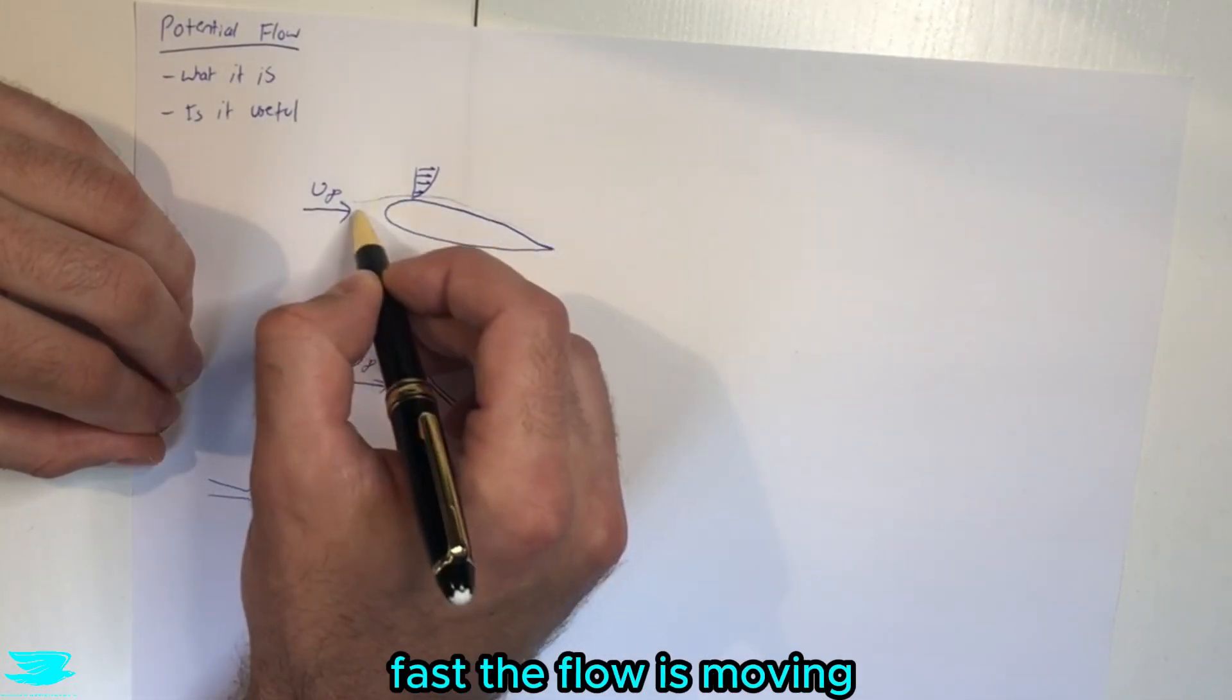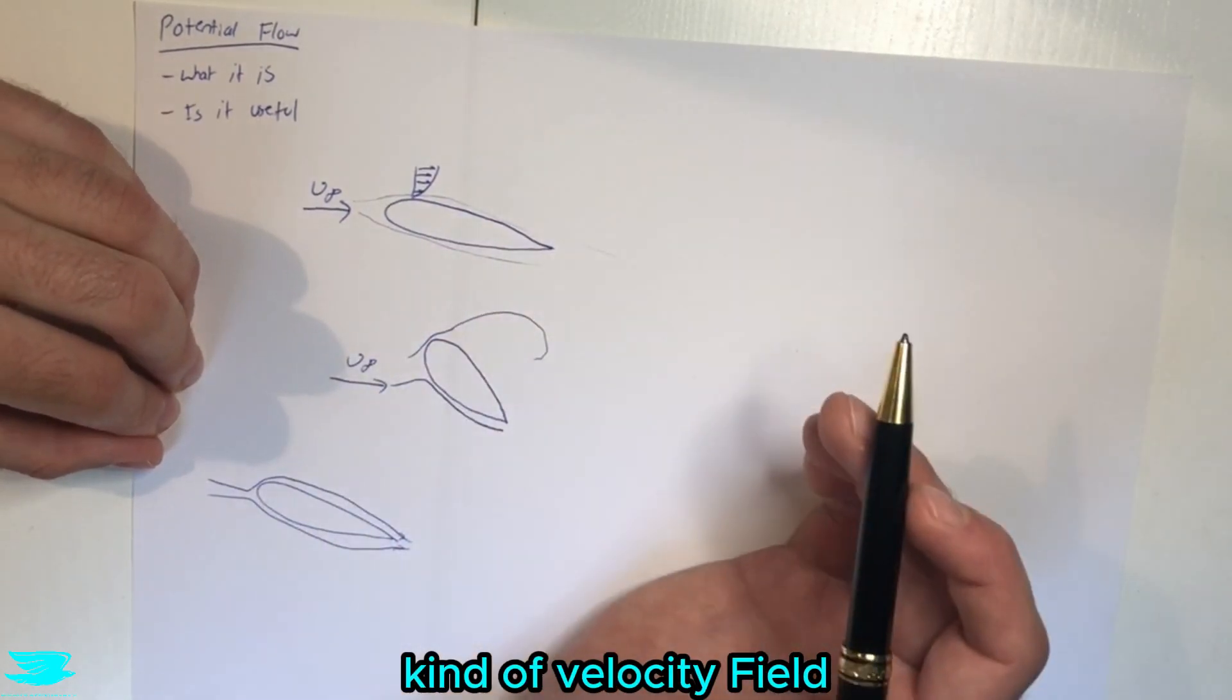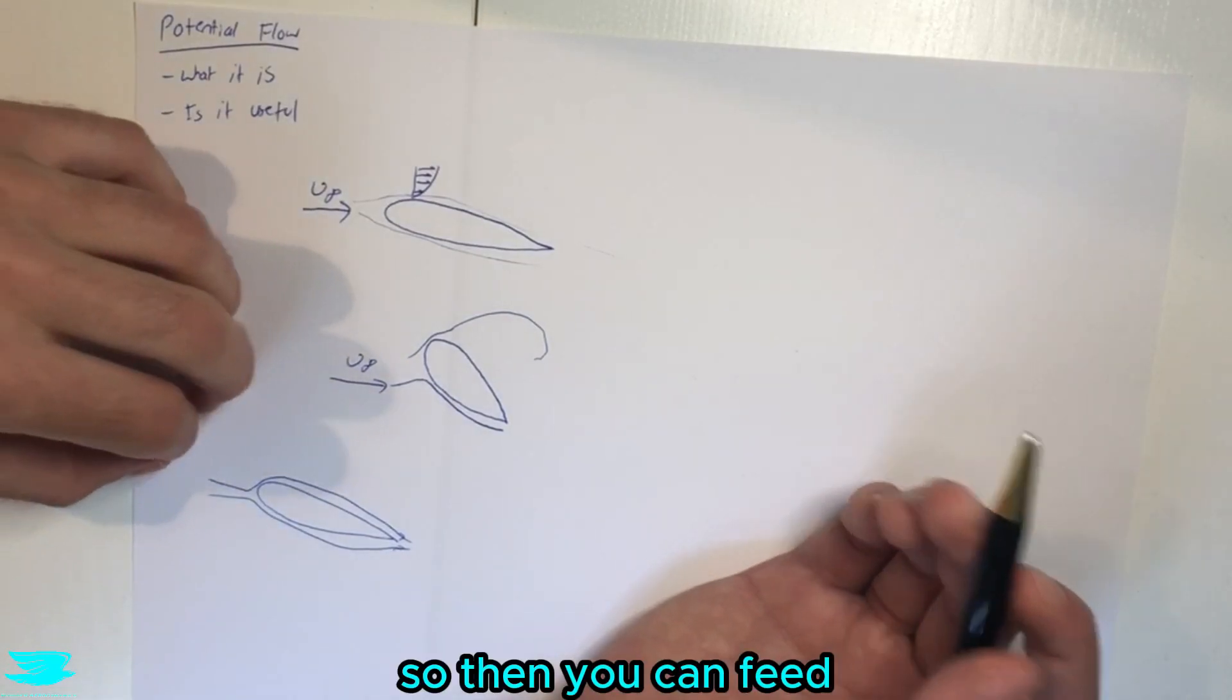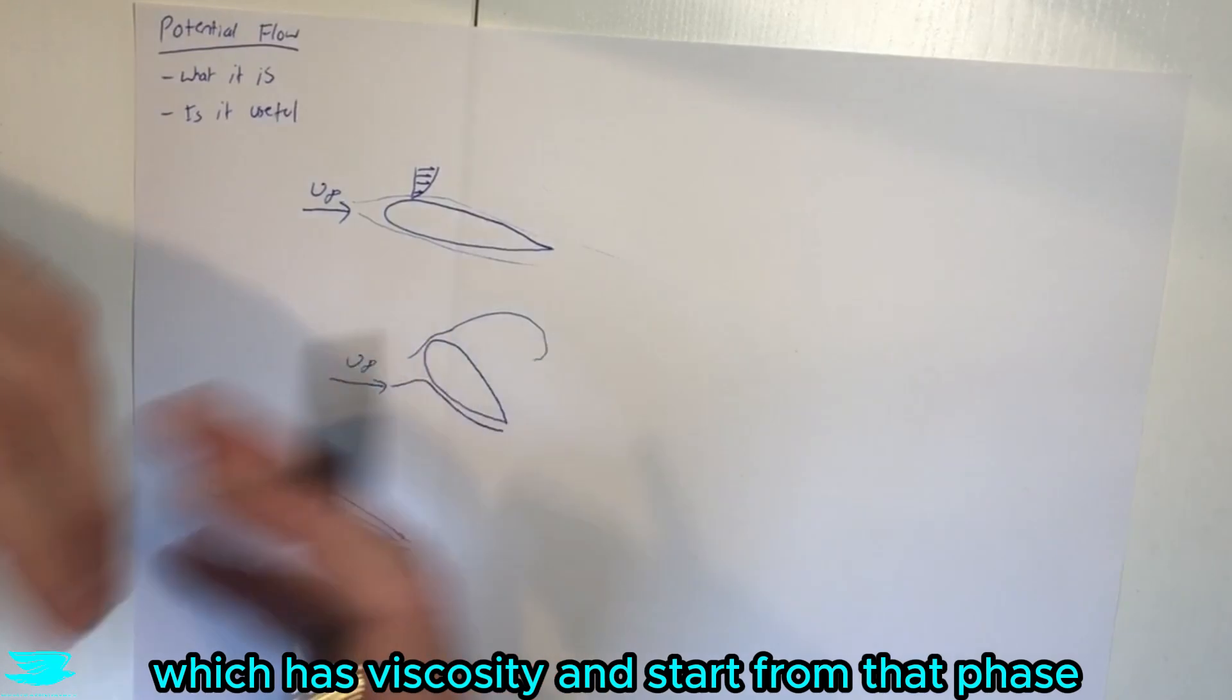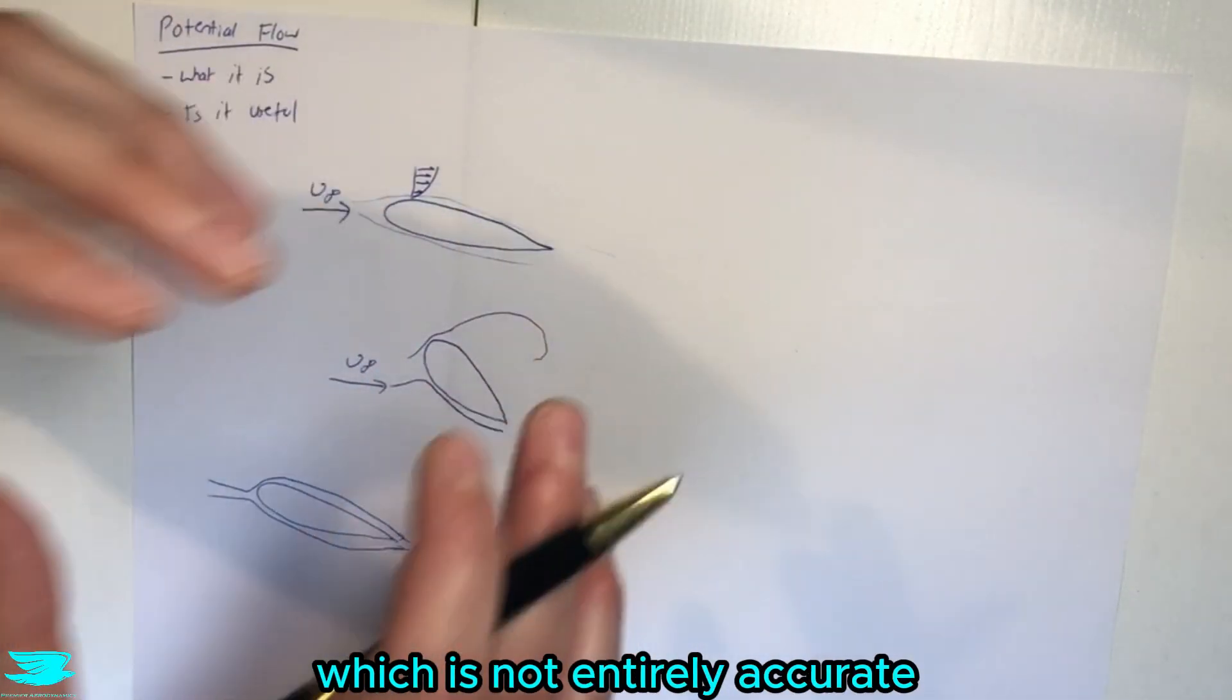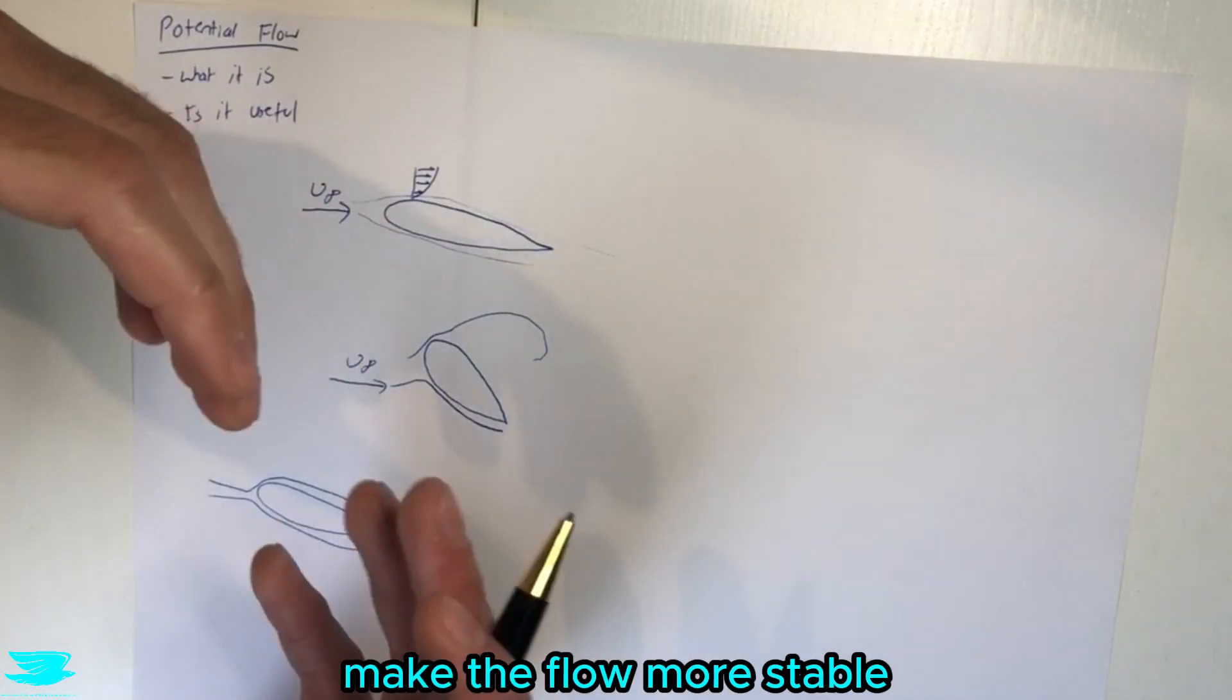So you might know generally about how fast the flow is moving over the airfoil, the kind of wake, kind of vorticity field and velocity field, sorry. So then you can feed that in to your regular CFD which has viscosity and start from that phase. So you have some information about the flow which is not entirely accurate, but it is good enough to make the flow more stable.